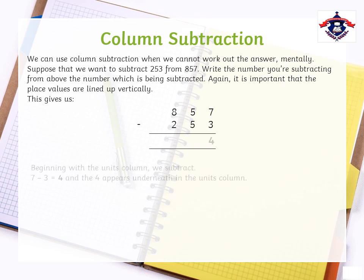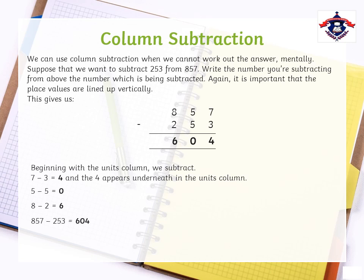Let's start, beginning with the units column. 7 minus 3 is equal to 4. 5 minus 5 is equal to 0. 8 minus 2 is equal to 6. So the answer we get is 604.